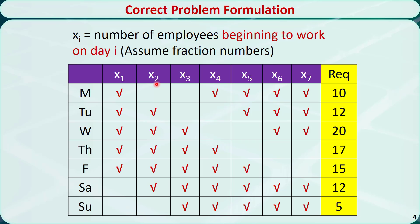The total number of employees working on Monday would be x1 plus x4 plus x5 plus x6 plus x7, and it should be greater than or equal to 10.